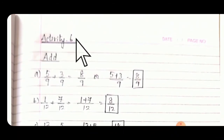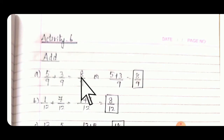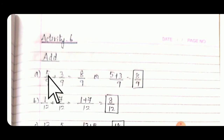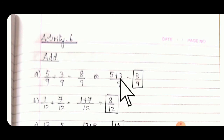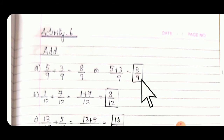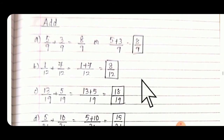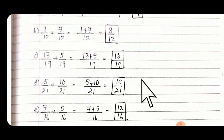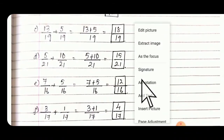Activity 6: Add fractions. 5/9 + 3/9 = 8/9. You cannot add the denominators — only the numerators you have to add. 5 + 3 = 8, or write (5 + 3)/9, which becomes 8/9. Similar type of questions for B, C, D, E.